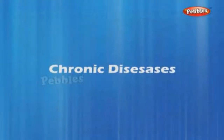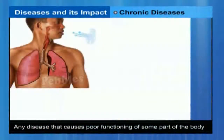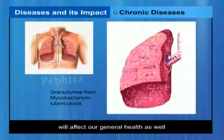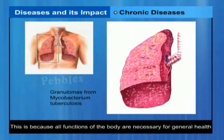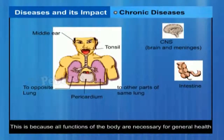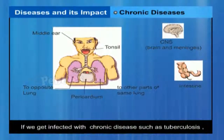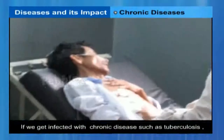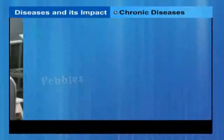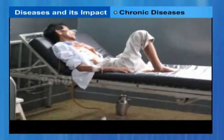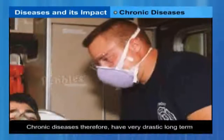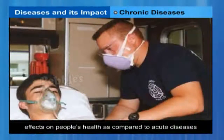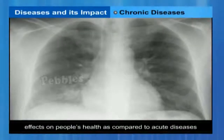Chronic diseases. Any disease that causes poor functioning of some part of the body will affect our general health as well, because all functions of the body are necessary for general health. If we get infected with a chronic disease such as tuberculosis of the lungs, then being ill over the years does make us lose weight and feel tired all the time. Chronic diseases, therefore, have very drastic long-term effects on people's health as compared to acute diseases.